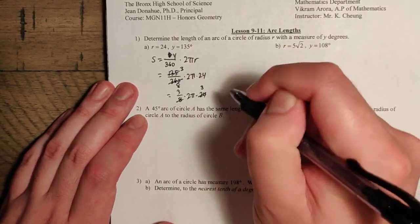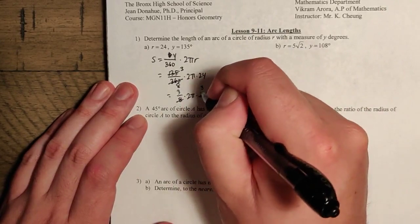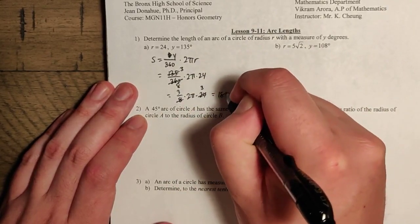The 8 and 24 have a common factor. So we can pull out a 3 here. And we're left with 3 times 2 is 6 times 3 is 18. So this should be 18 pi.